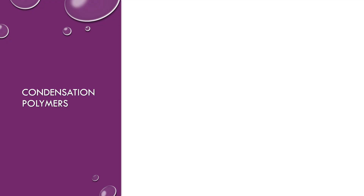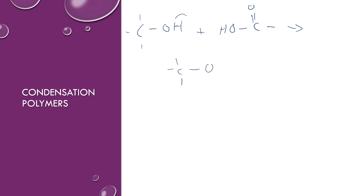To make a condensation polymer, you have to have functional groups on the molecules that are reacting. Frequently those are things like alcohols or carboxylic acids. The important parts are the functional groups — that's what's actually doing the reacting. When they react, they're going to form a new bond, a new connection. The hydrogens and oxygens are going to be released to form water, and they'll form a new bond to the other carbon. So you'll have two products: one which is a small molecule, and one which is the polymer.